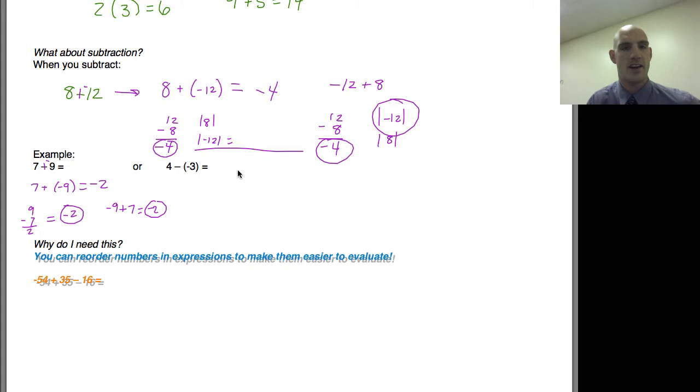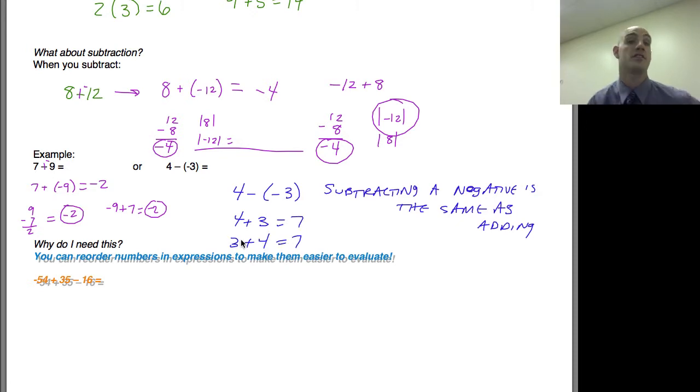Let's look at subtracting a negative. I know that 4-(-3). Subtracting a negative is the same as adding. So really this is 4+3, which equals 7. And 3+4 equals 7 as well. That's the commutative property. Switching the order of an addition or a multiplication problem.